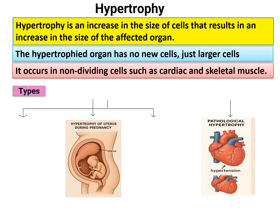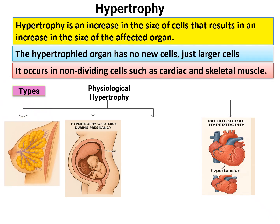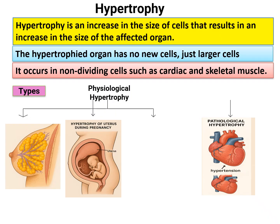There are two types of hypertrophy: physiological hypertrophy and pathological hypertrophy. Physiological hypertrophy occurs in normal physiological conditions. The best example is breast hypertrophy. During pregnancy and lactation, the breast size increases. To cope with increased milk production, the lactiferous ducts undergo hypertrophy — this is the best example of physiological hypertrophy.